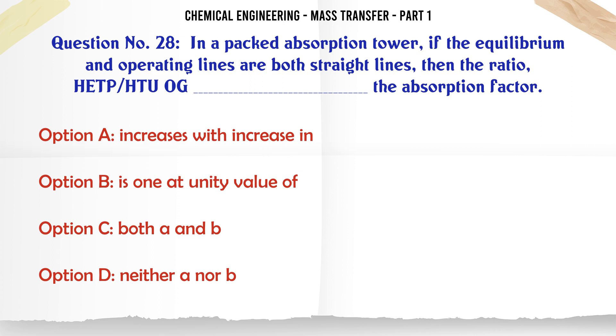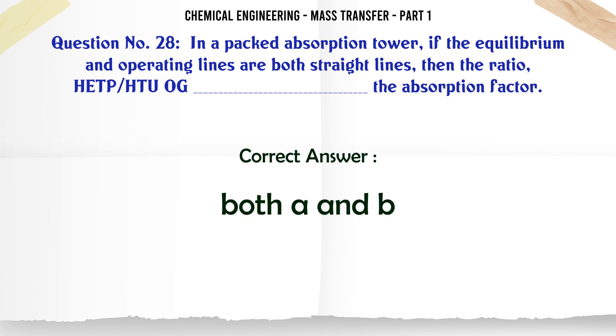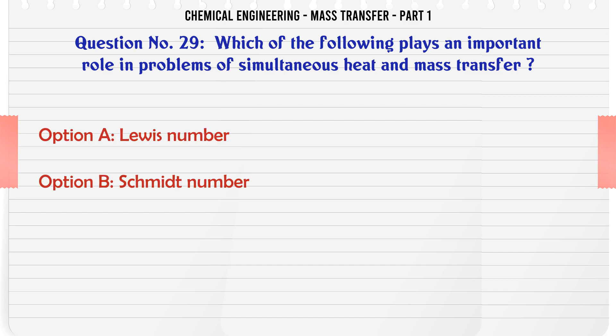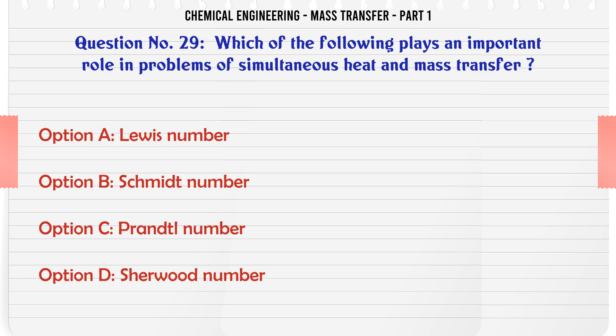Which of the following plays an important role in problems of simultaneous heat and mass transfer? A. Lewis number. B. Schmidt number. C. Prandtl number. D. Sherwood number. The correct answer is Lewis number.